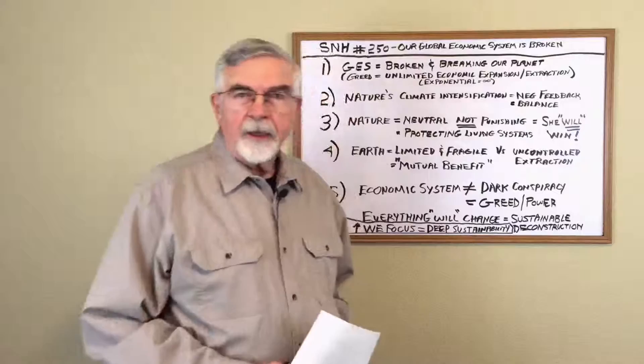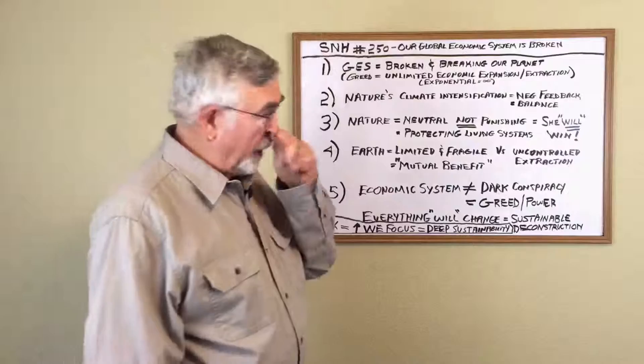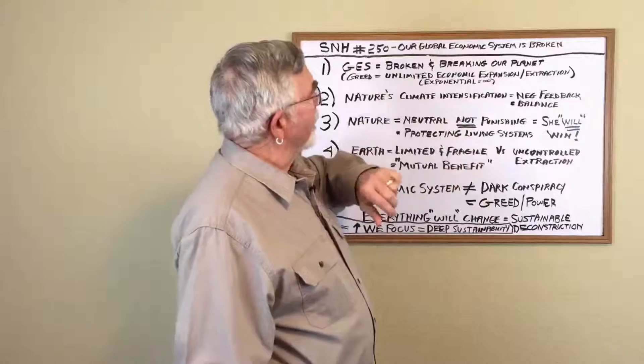Hi, Dick Rousher here. Today we're going to be talking about Stony Hill nugget number 250. We hit the mark. This one's entitled, Our Global Economic System is Broken.